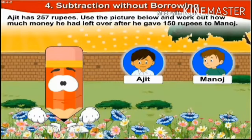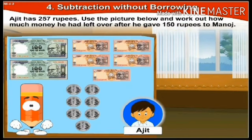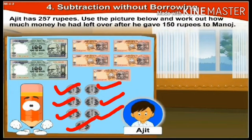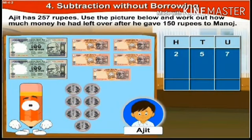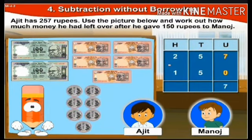Let's move on to the next sum. In the picture, Ajit has two hundred and fifty-seven rupees. How much money is left over after he gave one hundred and fifty rupees to Manage? We have two hundred rupee notes, five tens notes, and seven one-rupee coins. Arrange them in the column: two hundreds, five tens, seven units. He gave rupees one hundred and fifty. Starting from the units place: seven units minus zero units is seven units; five tens minus five tens is zero tens.